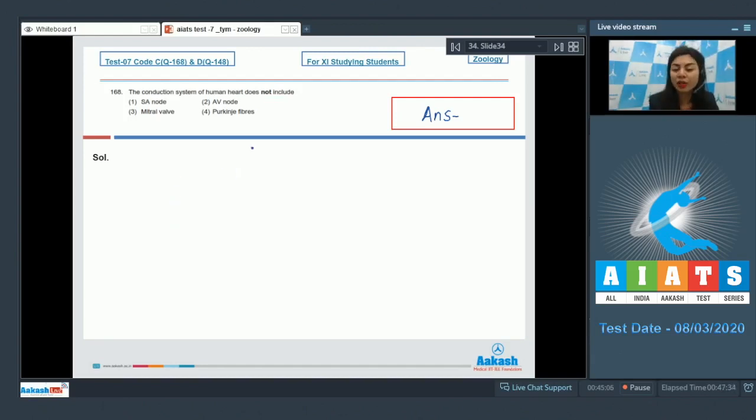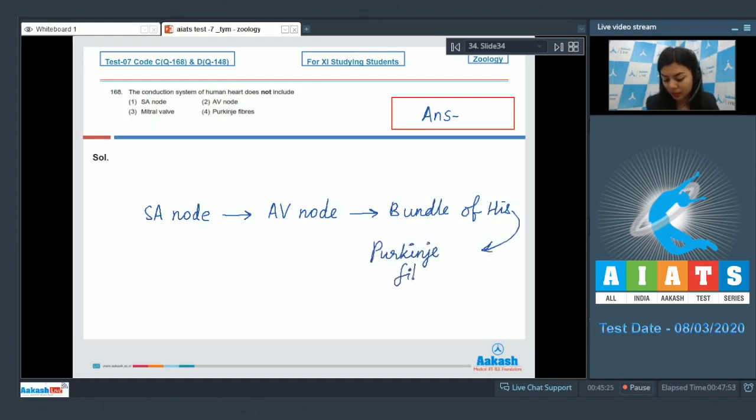The conduction system of the human heart includes SA node, AV node, bundle of hiss and Purkinje fibers. So among the given options, SA node, AV node and Purkinje fibers are a part of conduction system. But option number 3, mitral valve...